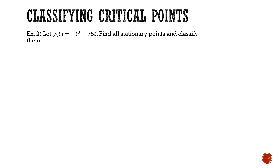Here we have example two for classifying critical points. Let y of t equal negative t cubed plus 75t. Find all the stationary points, also known as critical points, and classify them.